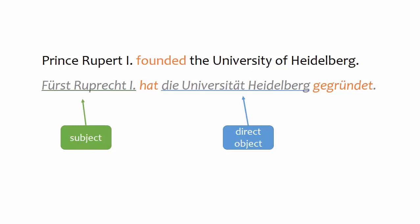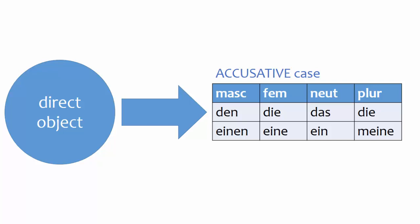In sentences in the active, the subject is the person who does or did the action. In this example, it's Prince Rupert. The direct object here is the thing he founded, namely the University of Heidelberg. Direct objects go into the accusative case, whose article endings are listed here.